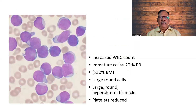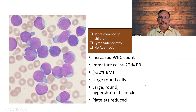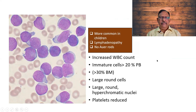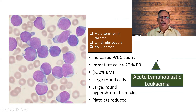More than 20% blasts in the peripheral blood and 30% in the bone marrow is indicative of an acute leukemia. Platelets are reduced. It is more common in children. So the diagnosis is acute lymphoblastic leukemia.